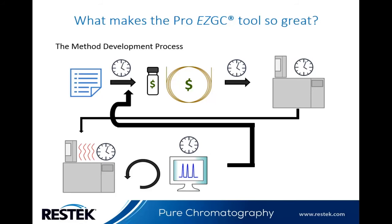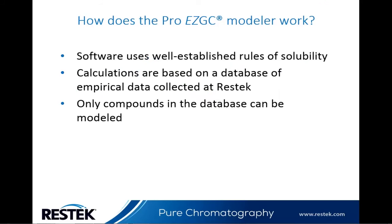Instead of spending hours or even days to optimize a separation, we can do this in just minutes without risk and without having to purchase a column or standards. So how does the ProEasy GC modeler work? The ProEasy GC software is based on well-established rules of solubility. It performs calculations based on a database of empirical data that we collect here at ResTech. Using this data, we can predict solubilities of any of the modeled compounds under any oven conditions on a given column on which they're modeled.